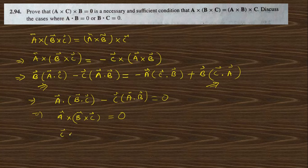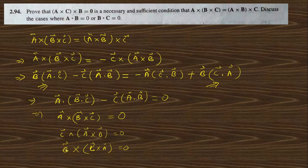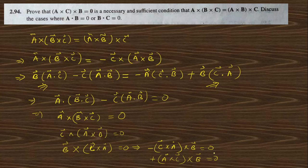Setting c cross a equal to zero and substituting, and similarly a cross (c cross b) also equals zero, and a cross c times cross also equals zero. So the combined result is zero.